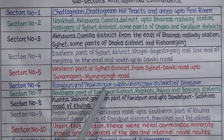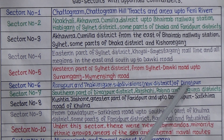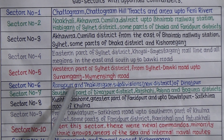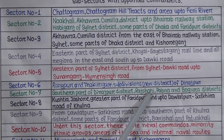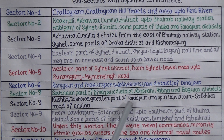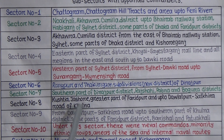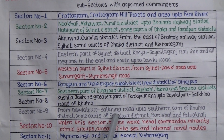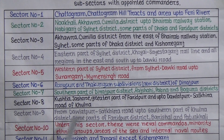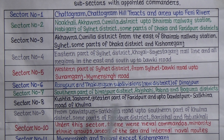Sector 6 included Rangpur and Thakurgaon subdivisions, now in Dinajpur district. Sector 7 included the southern part of Dinajpur district, Rajshahi, Pabna, and Bogra districts. Sector 8 included Kushtia, Jessore, the greater part of Faridpur, and up to Daulatpur-Satkhira road of Khulna. Sector 9 covered from Daulatpur-Satkhira road up to the southern part of Khulna district, some parts of Faridpur, Barisal, and Patuakhali.